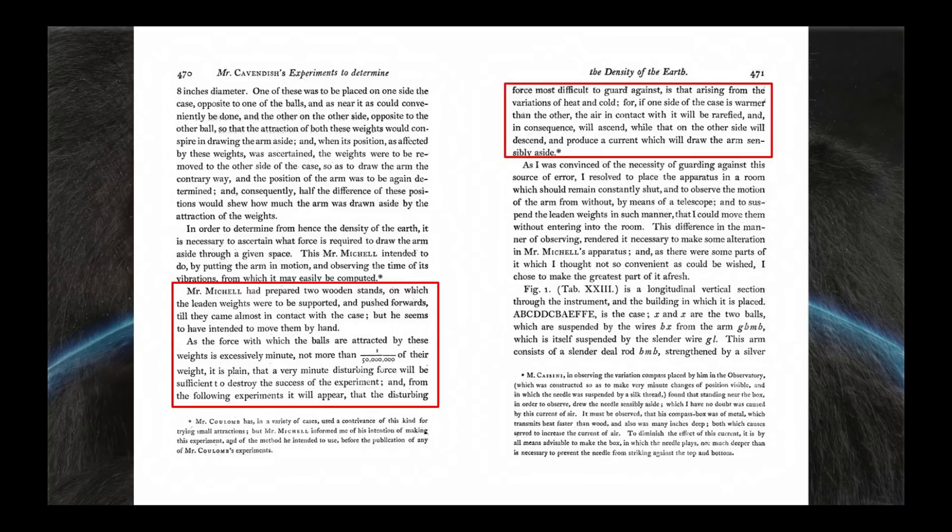For if one side of the case is warmer than the other, the air in contact with it will be rarefied and in consequence will ascend, while the other side will descend and produce a current which will draw the arm sensibly aside. But the part that Sleeping Warrior focuses on is this 1/50 millionth statement. All Cavendish was trying to do was impress on the reader how difficult this experiment actually is to conduct and how sensitive the torsion balance has to be. 1/50 millionth is the force of attraction of those two small masses. It has nothing to do with the gravitational attraction of the earth. So let's move forward.